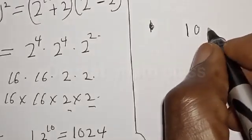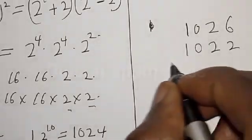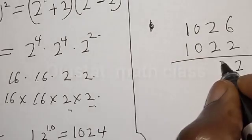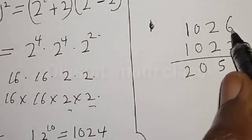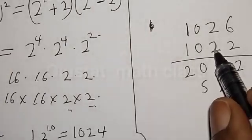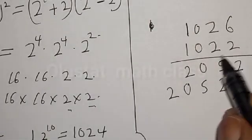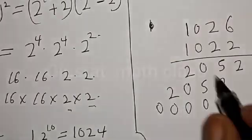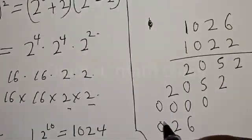Multiplying 1026 by 1022: 2 times 6 is 12, carry 1; 2 times 2 is 4 plus 1 is 5; 2 times 0 is 0; 2 times 1 is 2. Then 0 times 6 is 0; 0 times 2 is 0; 0 times 0 is 0; 0 times 1 is 0. Then 1 times 6 is 6; 1 times 2 is 2; 1 times 0 is 0; 1 times 1 is 1.